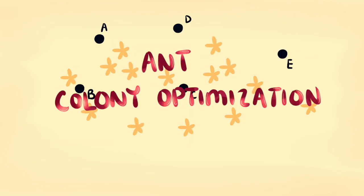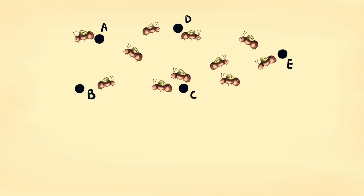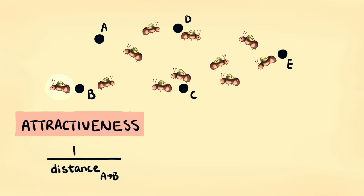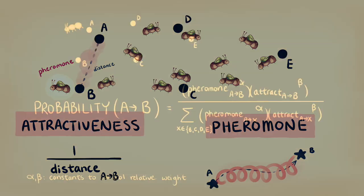A better choice is what's called ant colony optimization, where we simulate a swarm of virtual ants exploring our cities. The probability of an ant moving from one city to another depends on the attractiveness of the move, typically the inverse of distance, as well as the amount of pheromone present. Putting it all together, we get this formula.